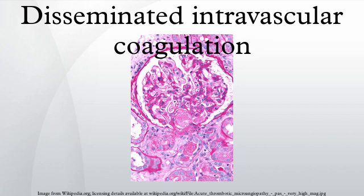One critical mediator of DIC is the release of a transmembrane glycoprotein called tissue factor (TF). TF is present on the surface of many cell types and is not normally in contact with the general circulation, but is exposed to the circulation after vascular damage. For example, TF is released in response to exposure to cytokines, tumor necrosis factor, and endotoxin. This plays a major role in the development of DIC in septic conditions. TF is also abundant in tissues of the lungs, brain, and placenta, which helps explain why DIC readily develops in patients with extensive trauma.